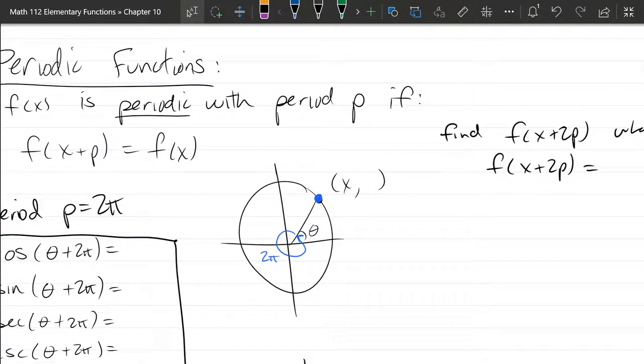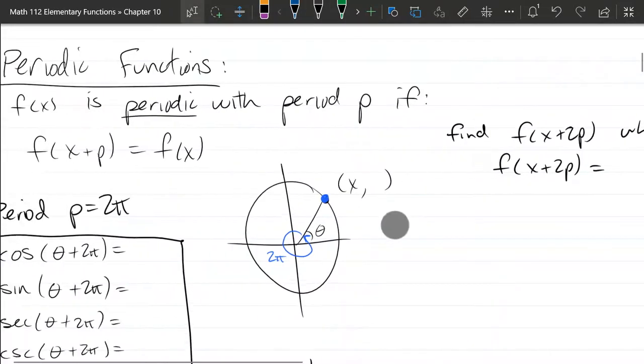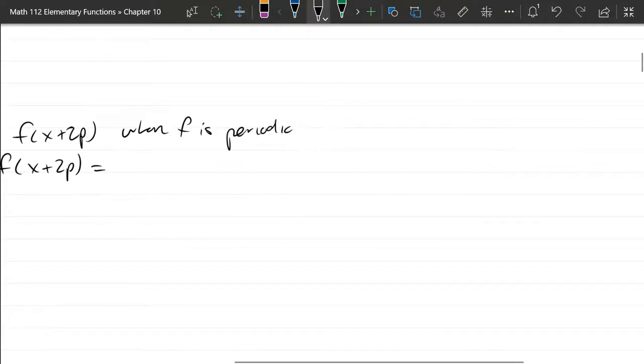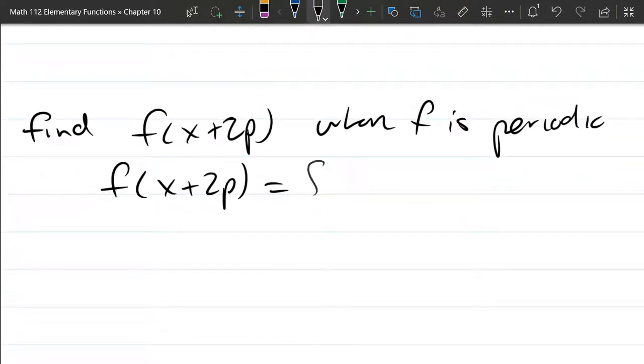So first thing we're going to do is look at what happens if I would add 2P in here. So we already have the property that if I write f of an input plus P equals just f of the input. So what we're going to do is we're going to break off one of these P's right here. So 2P is also known as P plus P.